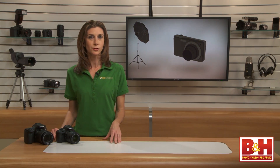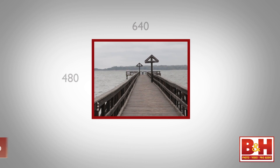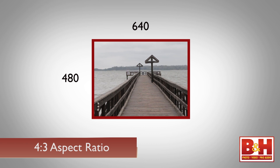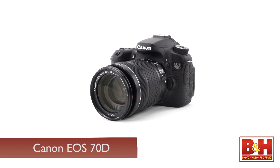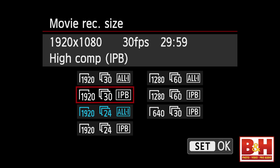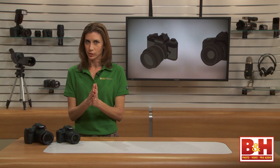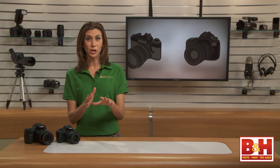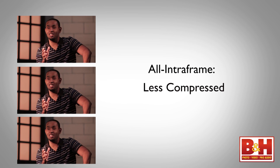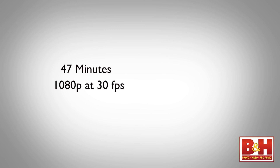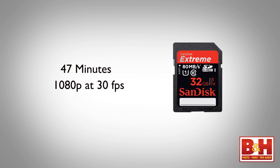The last resolution option is standard definition, which is 640x480 pixels — what most older CRT TVs display. Different cameras may also have different compression rates and formats available. For example, the 70D offers two different compression options: IPB and All-I, or All-Intra. IPB footage is more compressed, creating smaller file sizes and allowing you to fit more footage on a media card. All-I is less compressed, allowing you more flexibility when editing frame by frame, though you can fit less footage on a card. A general guideline is that you can capture about 47 minutes of 1080 footage at 30fps on a 32GB card in All-I.